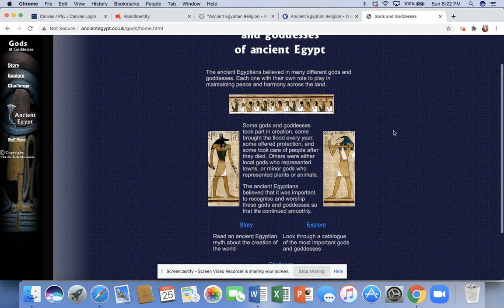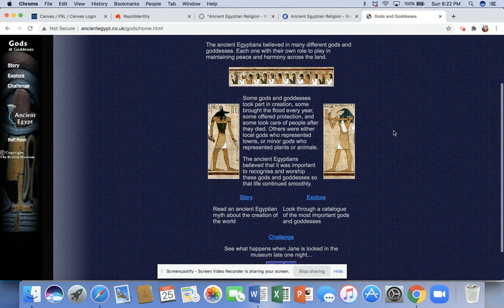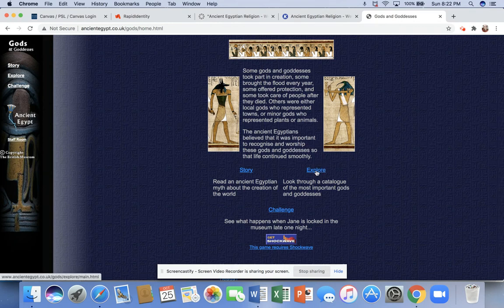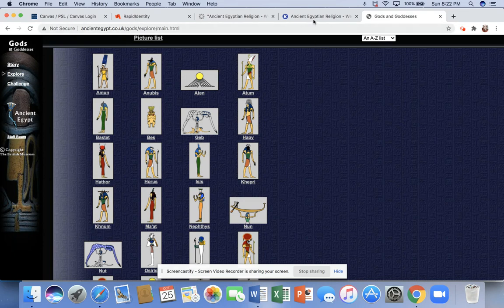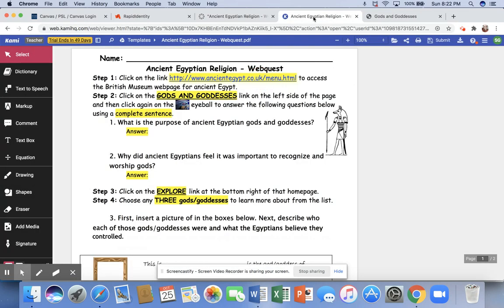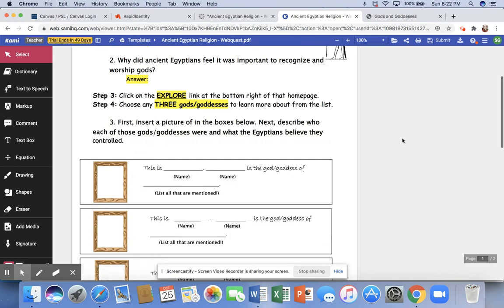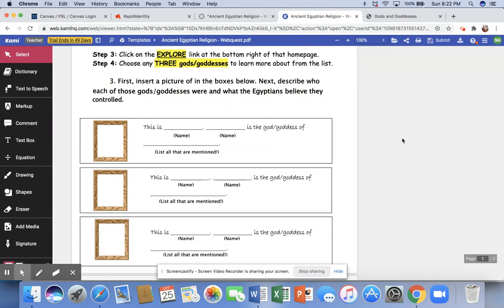Once you answer questions 1 and 2 in a complete sentence, you're then going to click on the Explore tab. Part 2 of that section asks you to choose three gods or goddesses to learn more about from the list. You're going to identify their name and tell me what he or she was the god or goddess of.